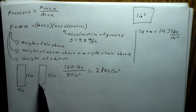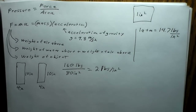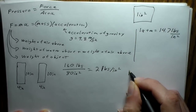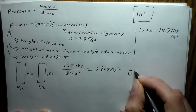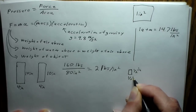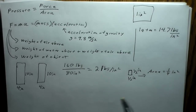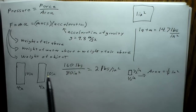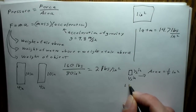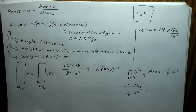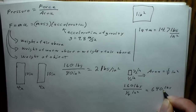Now let's say someone is wearing high heels with a very narrow pointy heel, and they're standing on just one heel that's half an inch by half an inch. That area is a quarter of a square inch. The pressure is 160 pounds divided by 0.25 square inches, which is 160 times 4 — that's 640 pounds per square inch.